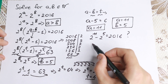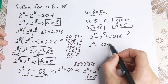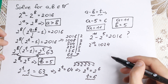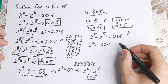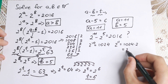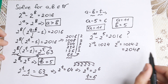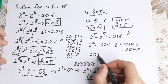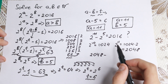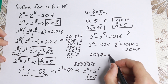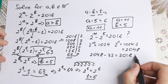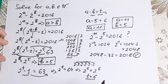We know 2 to the 10th power equals 1024, so 2 to the 11th power is 1024 times 2 equals 2048. And 2 to the 5th power is 32. So 2048 minus 32 equals 2016. Our answer is absolutely correct.